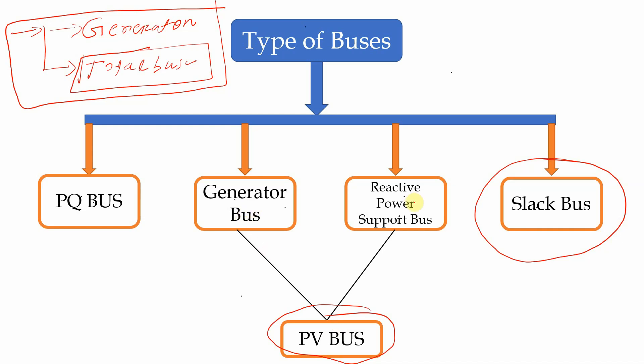If the question mentions 30 PV buses, you cannot conclude how many of those are generator buses and how many are reactive power support buses, because there may be no generator buses among them. So you cannot select a slack bus from PV buses. The conclusion is: to select a slack bus, you can only select it from generator buses; otherwise select the slack bus from the total number of buses.